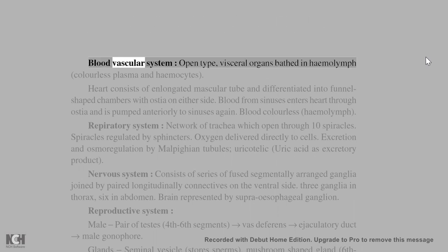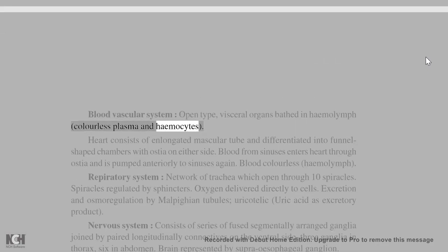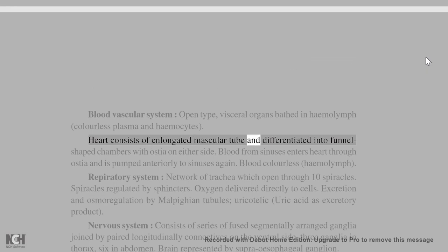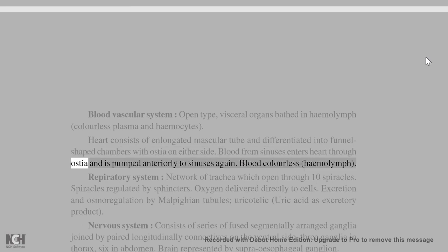Blood vascular system is open type; visceral organs are bathed in hemolymph, consisting of colorless plasma and hemocytes. The heart consists of an elongated muscular tube differentiated into funnel-shaped chambers with ostia on either side. Blood from sinuses enters the heart through ostia and is pumped anteriorly to the sinuses again. Blood is colorless, called hemolymph.